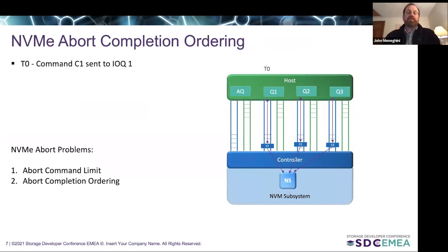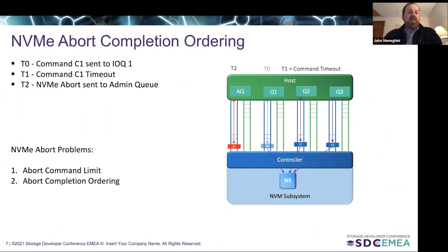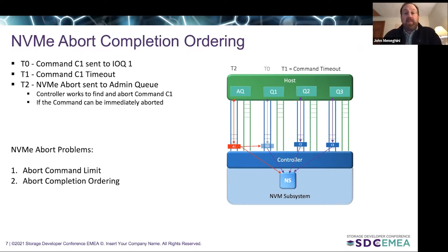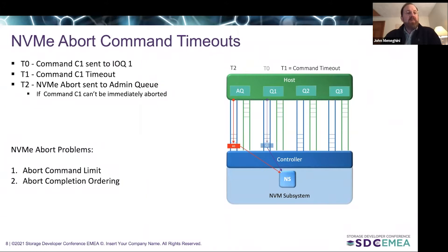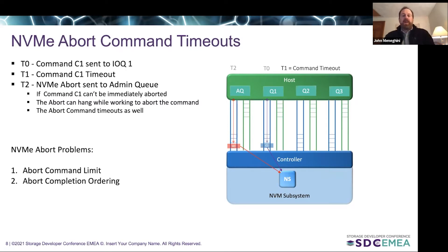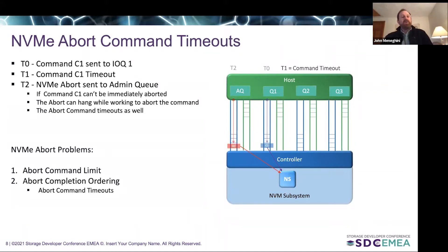So when a command times out, the host will send an NVMe abort command on the admin queue. The controller then works to find and abort the command that was requested. If the command can be immediately aborted, the completion queue entry for the aborted command is posted on the respective IO queue before the abort command CQ is posted on the admin queue. In the simple case, this is all good. However, if the command can't be immediately aborted, the abort can actually hang while working to abort the command. This can then lead to an abort command timeout itself — so now the host actually has two commands that are timed out: the original command it was trying to abort and the abort command itself. This is a direct result of the way the abort command is defined — because of the abort completion ordering requirement in the specification.